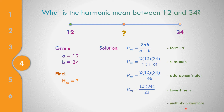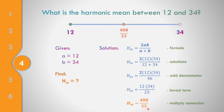With 1/23 as the reduced factor, we copy 12 and 34 in the numerator. 12 times 34 equals 408, giving us 408/23. The harmonic mean between 12 and 34 is 408/23.